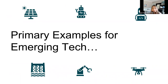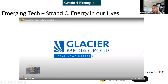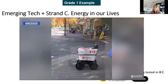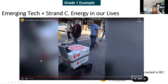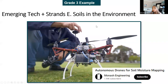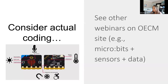A couple of primary examples for emerging tech: in grade one, looking at energy in our lives, you can show electric pizza delivery robots currently being piloted in British Columbia — saving energy through automation. For grade three, looking at soils in the environment, there's a video about drones being used to collect soil samples or do soil mapping by taking images to check soil quality. These give younger students concrete examples of emerging technology.